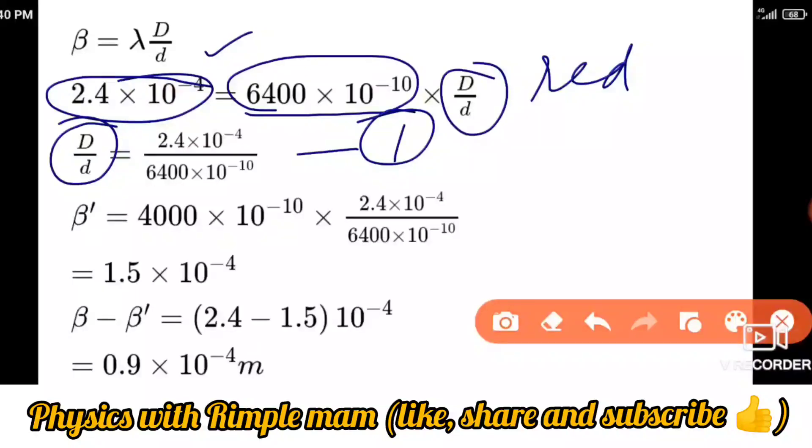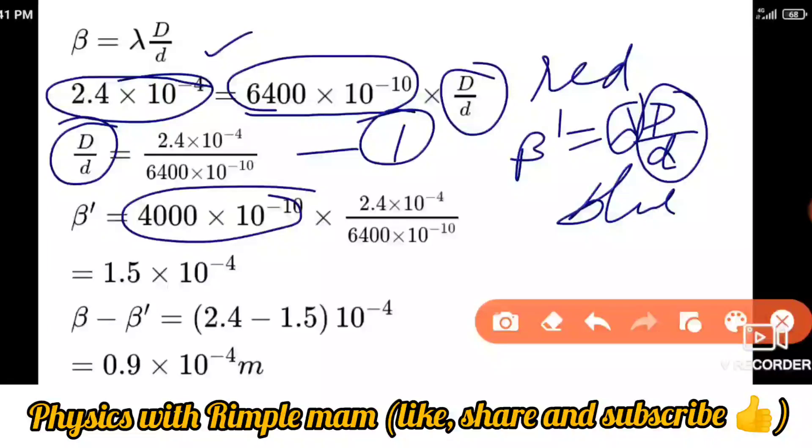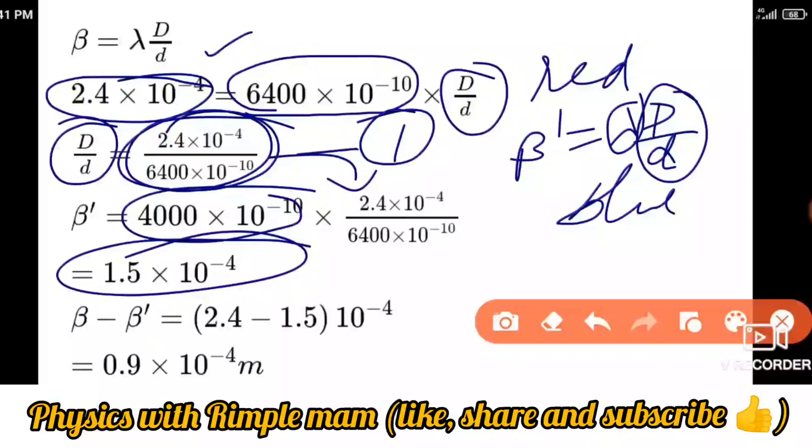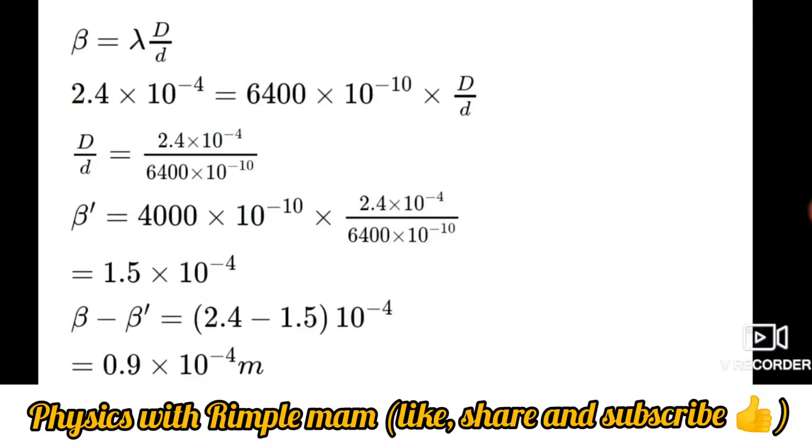We apply the formula beta equals lambda D over d. Beta is given as 2.4 into 10 raised to power minus 4. Lambda is 6400 angstrom, convert to meters as 10 raised to power minus 10. D over d is not given, so we solve for d over d—this is equation number one for red light. Now we change to blue light. Beta dash equals lambda D over d. We solve for beta dash, putting all values. Lambda is now 4000 angstrom. When we put D over d and solve, beta dash is 1.5 into 10 raised to power minus 4. Beta minus beta dash equals 2.4 minus 1.5, which is 0.9 into 10 raised to power minus 4 meters.